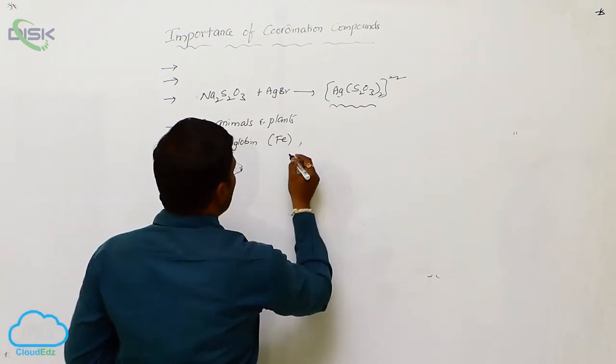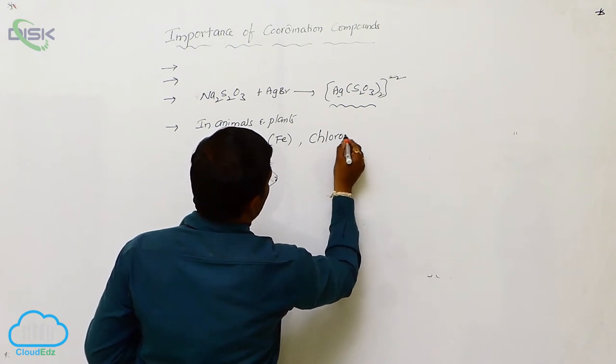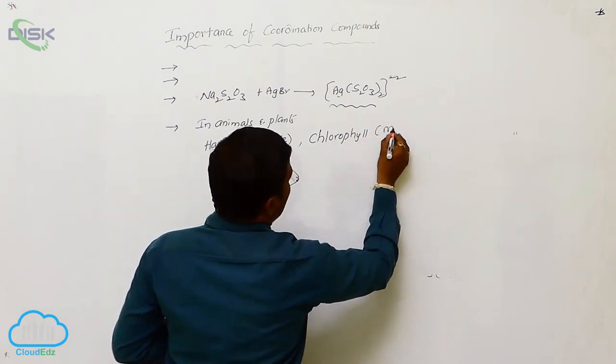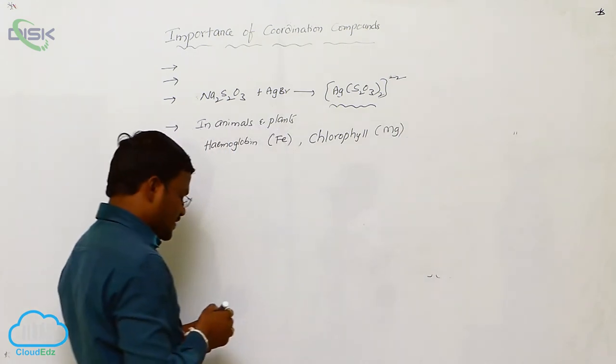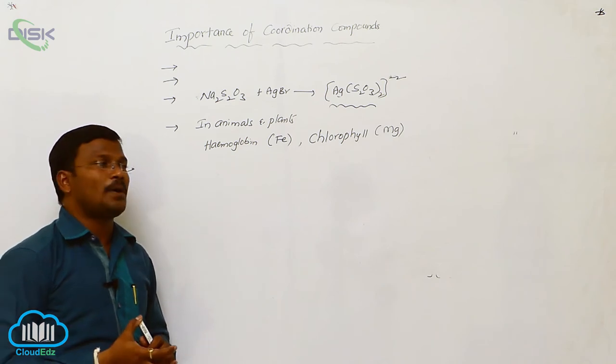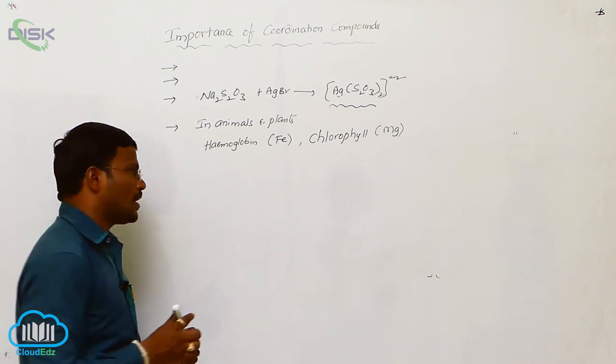Whereas, the same coordination complexes are available in our body in the form of chlorophyll. In chlorophyll, the central atom present is magnesium. Actually, due to presence of chlorophyll, there is the possibility of photosynthesis in plants. Similarly,